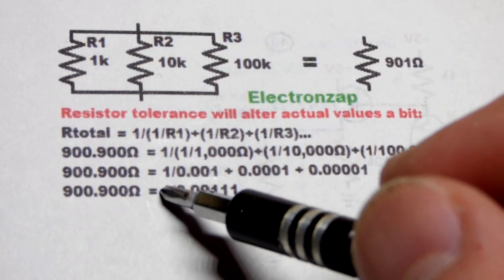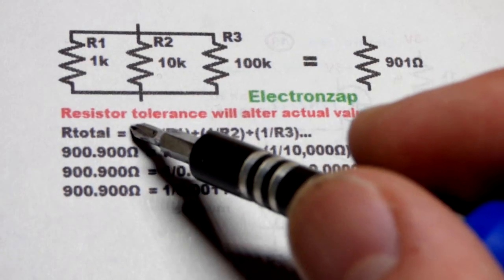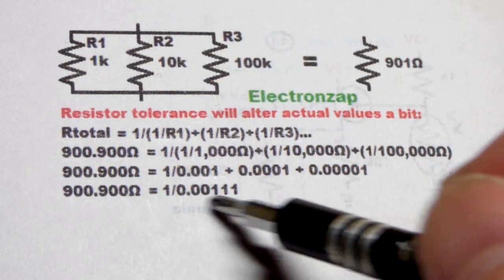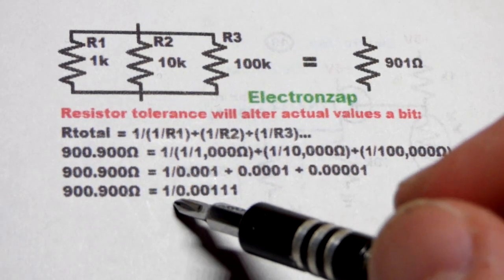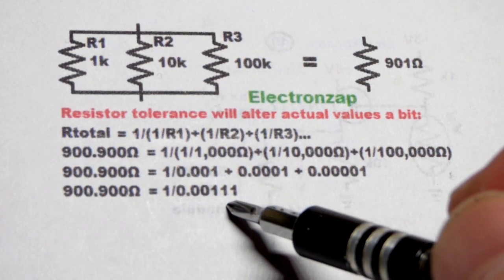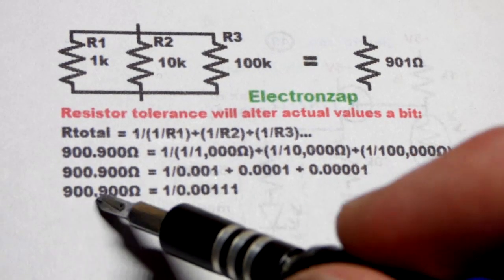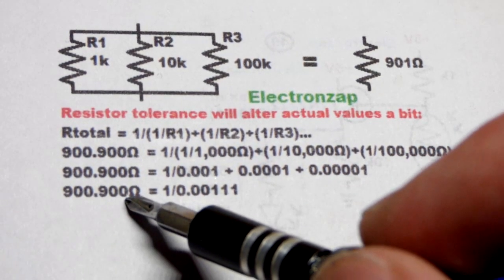And so we've still got the 1 over here, the 1 up there. Now we're going to get the inverse of conductance in Siemens, which is resistance. So that's just 1 divided by the conductance in Siemens. That'll give us 900.9 right there.